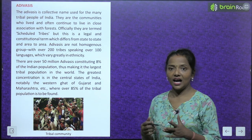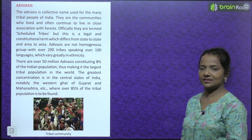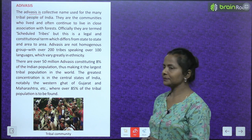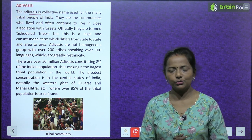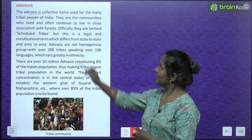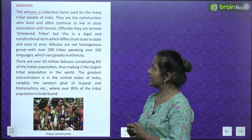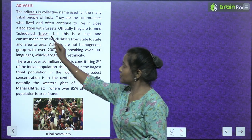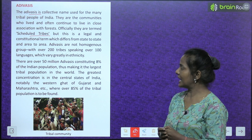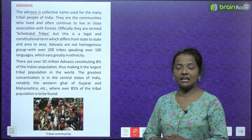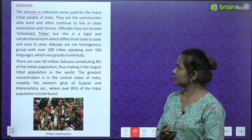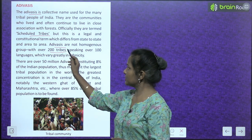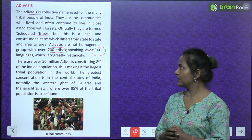Now next is Adivasis. The Adivasis is a collective name used for the many tribal people of India. They are the communities who lived and often continue to live in close association with forests. Officially they are termed scheduled tribes, but this is a legal and constitutional term which differs from state to state and area to area. Adivasis are not a homogeneous group, with over 200 tribes speaking over 100 languages which vary greatly in ethnicity.